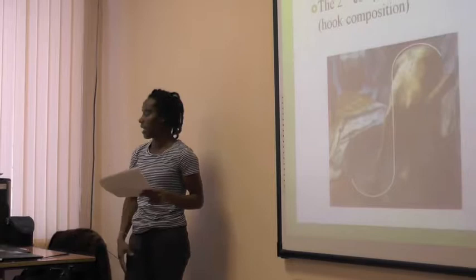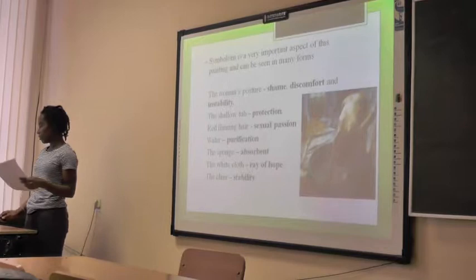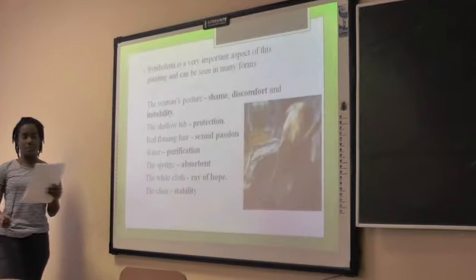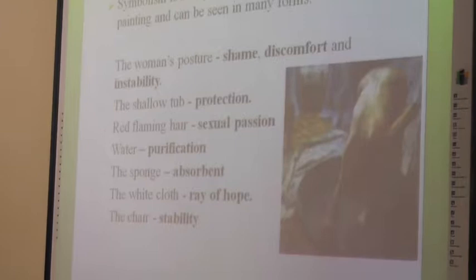The second compositional scheme is the S-shape or O-composition. This scheme shows how confined the woman is in her space — with the upper and lower curves — and how difficult it was for her to retain balance. Thus the woman's pose symbolizes instability. The figures closely surrounding her represent close relatives and friends who are there to provide shelter and support, representing the concept of protection.